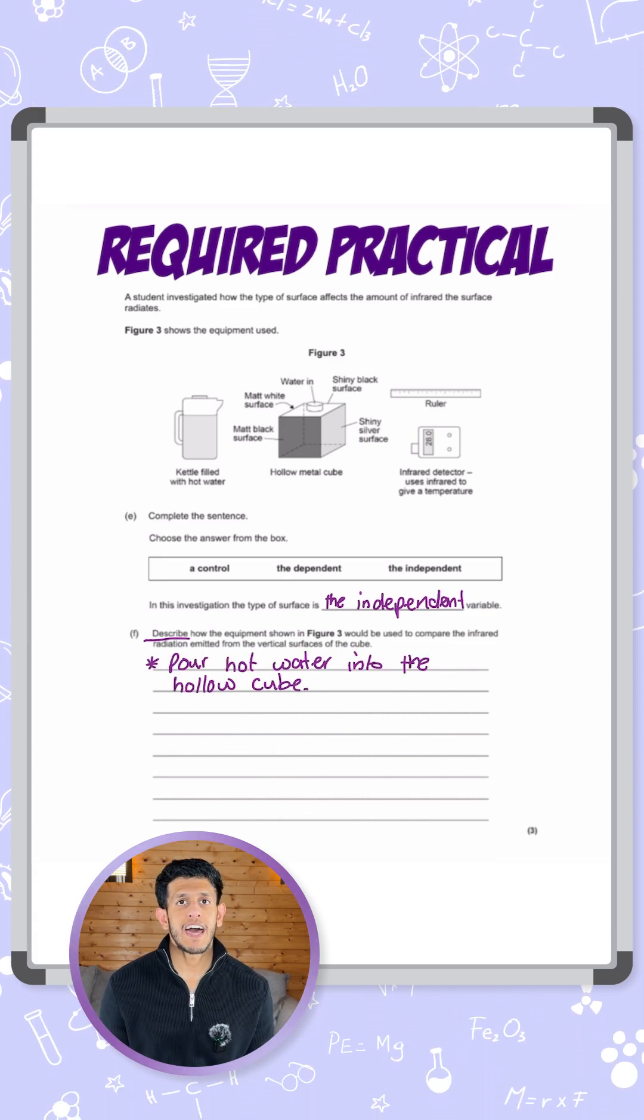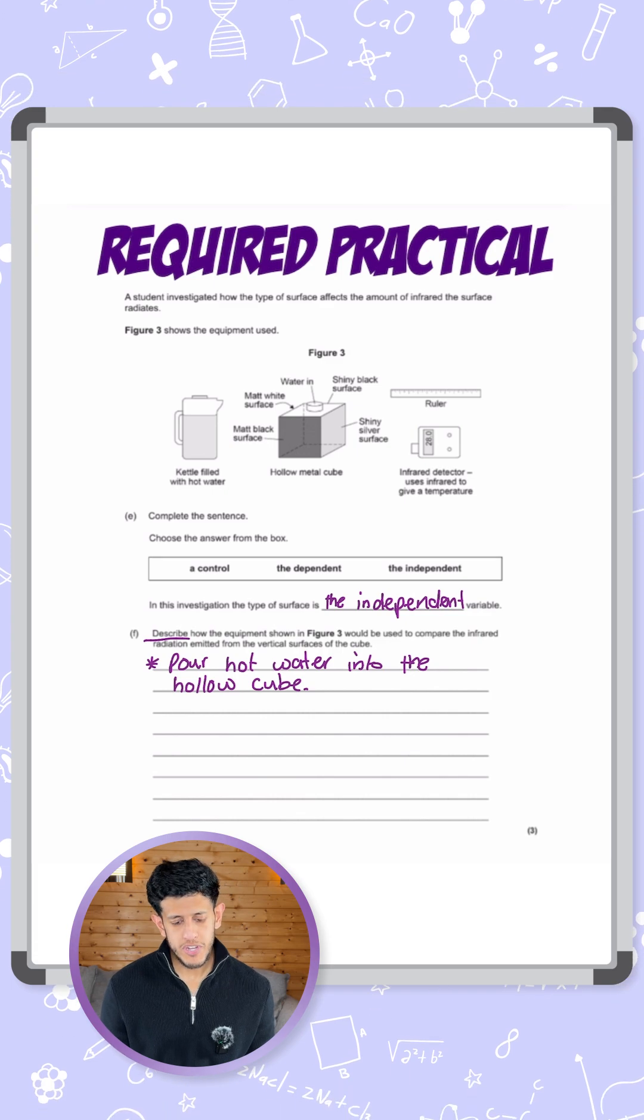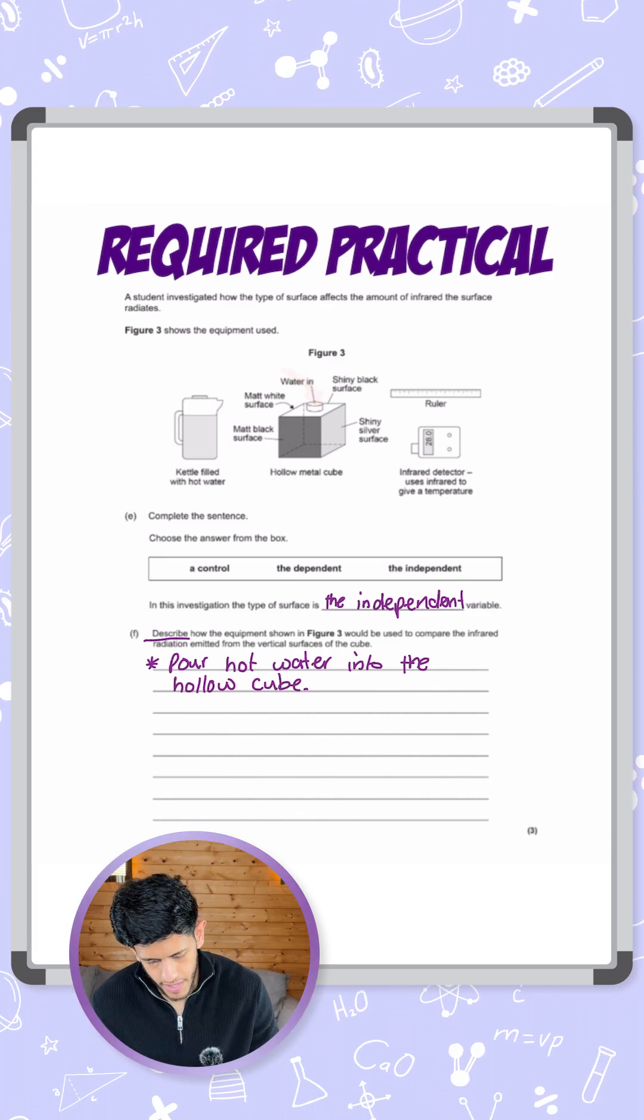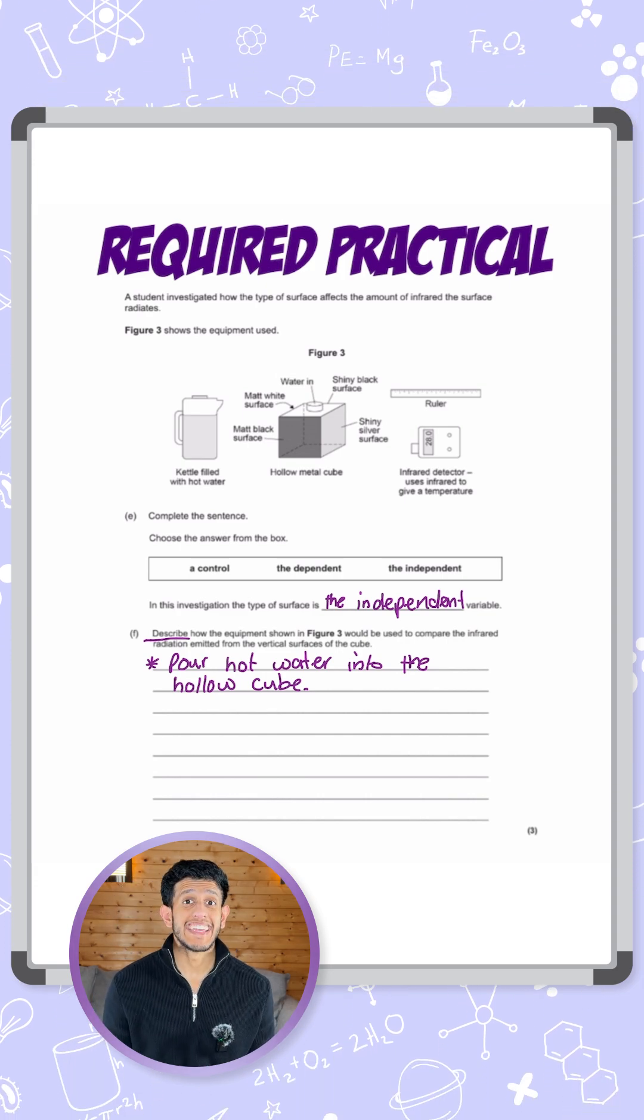So the first step here is we need to have some sort of heat that is in the cube, and we do that by pouring hot water into the top of the cube. You can see the hole here at the top to allow water to go in, so we use hot water to heat it up.